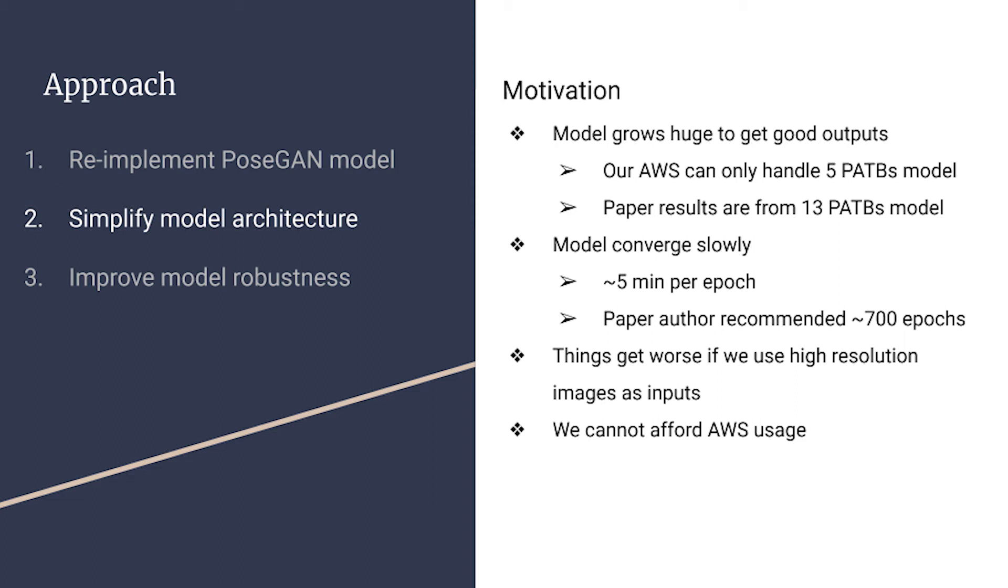Even if we use low-resolution images, it takes us five minutes per epoch, and the loss converges quite slowly. The paper said it might need about 700 epochs to finish the training. With the limitation of AWS credit, we have to simplify the model.